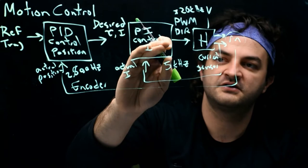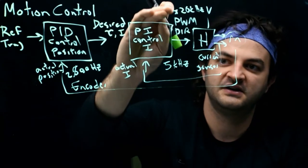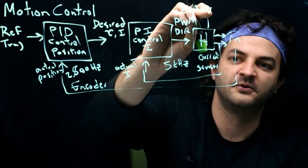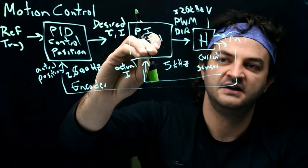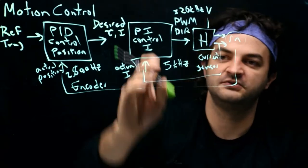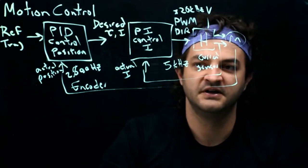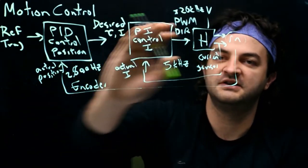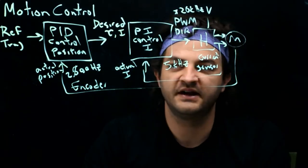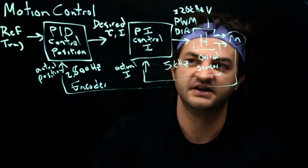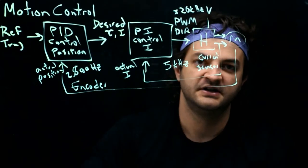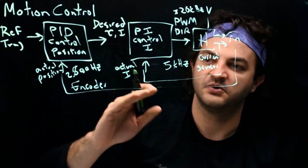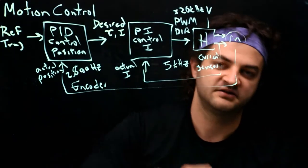The current controller will produce, say, five PWM duty cycles in a row before the current gets sampled again and then outputs a new PWM to control the current through the motor. Then 200 times a second we'll read the motor position and figure out if we're in the right position — changing desired torque if we moved too far to bring us back, or zero torque if we're at the right spot, or positive torque if we're still too far away.